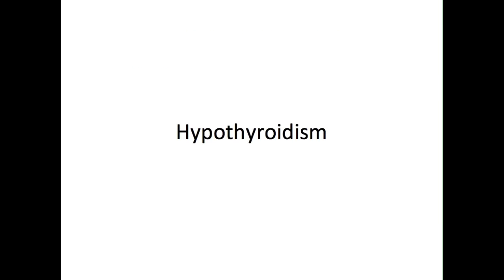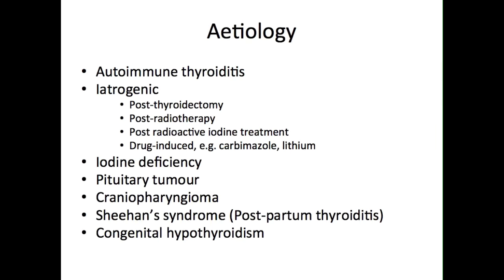Hypothyroidism is a condition that is more common in women and more common in elderly patients. There are a multitude of causes. The most common cause in the UK is autoimmune thyroiditis, which may be associated with a goiter, as in Hashimoto's thyroiditis, or it may be associated with thyroid atrophy. In most cases, there are serum autoantibodies present against thyroglobulin, thyroid peroxidase enzyme, and also against receptors to which TSH binds. Autoimmune thyroiditis can be associated with other autoimmune conditions, for example pernicious anaemia and Addison's disease.